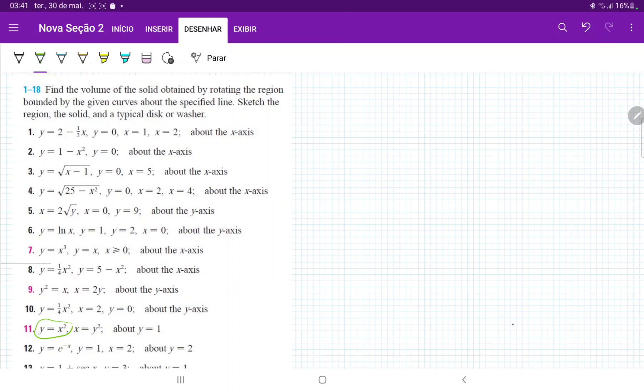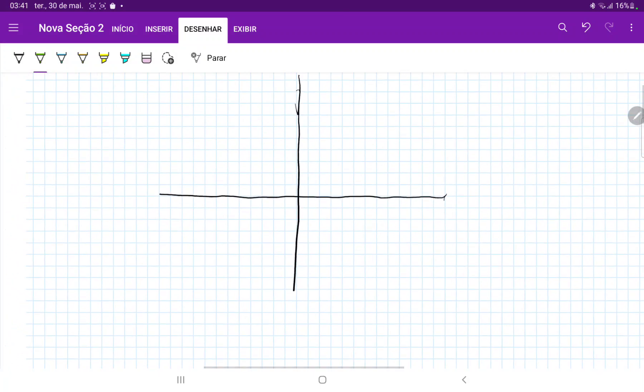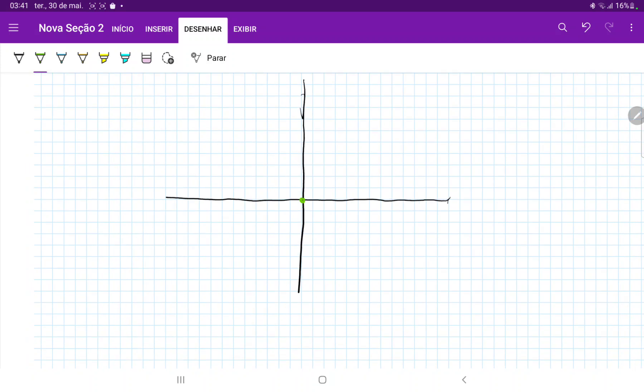We'll draw our y equals x squared first. So let's draw this, kind of zoom in. Y equals x squared. So we have here 1, 1, and then 2, 4, and so on.